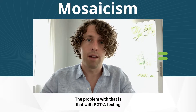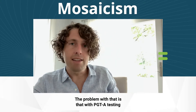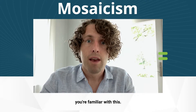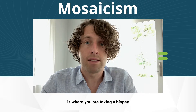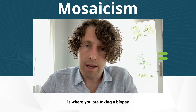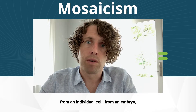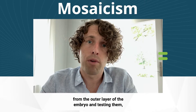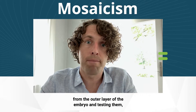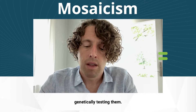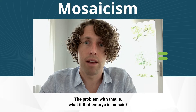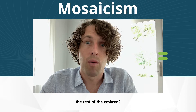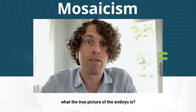The problem with that is that with PGTA testing up to this point — and if you've gone through IVF, you're familiar with this — PGTA testing is where you are taking a biopsy, pulling off several cells from the outer layer of the embryo and genetically testing them. The problem with that is: what if that embryo is mosaic? What if those cells don't actually represent the rest of the embryo?